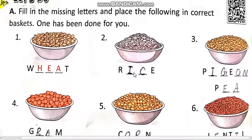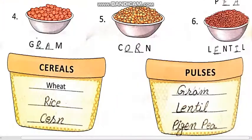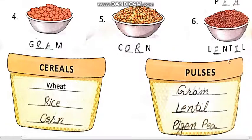Number 2: Rice. R-I-C-E. Number 3: Pigeon Pea. P-I-G-E-O-N-P-E-A. Number 4: Gram. G-R-A-M. Number 5: Corn. C-O-R-N.